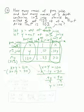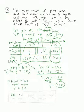Once we get y equals 100, we plug back into x plus y equals 120. So x plus 100 equals 120, which gives x equals 20. The answer is 20 ounces of pure juice and 100 ounces of 10% juice.